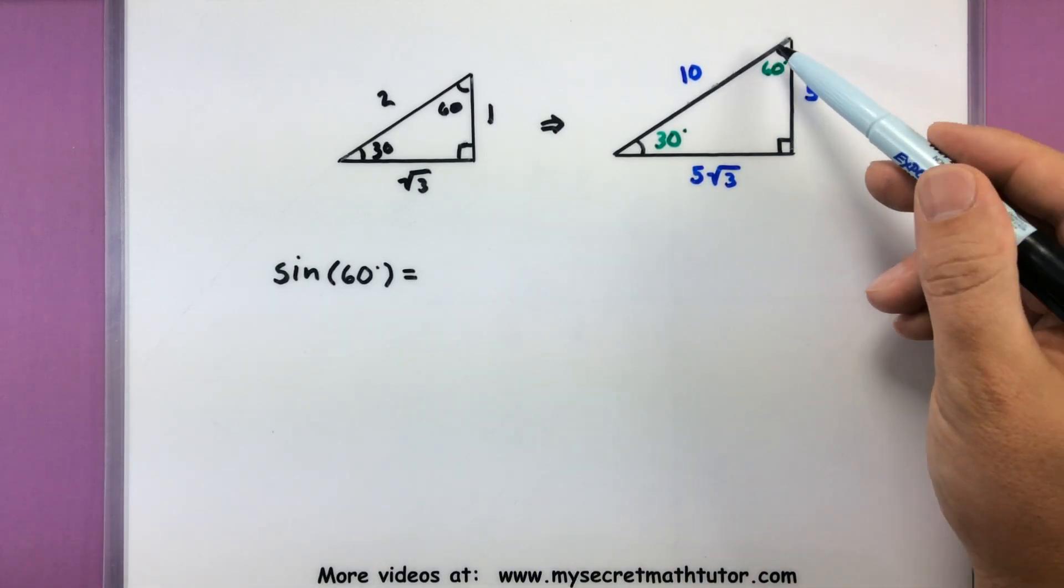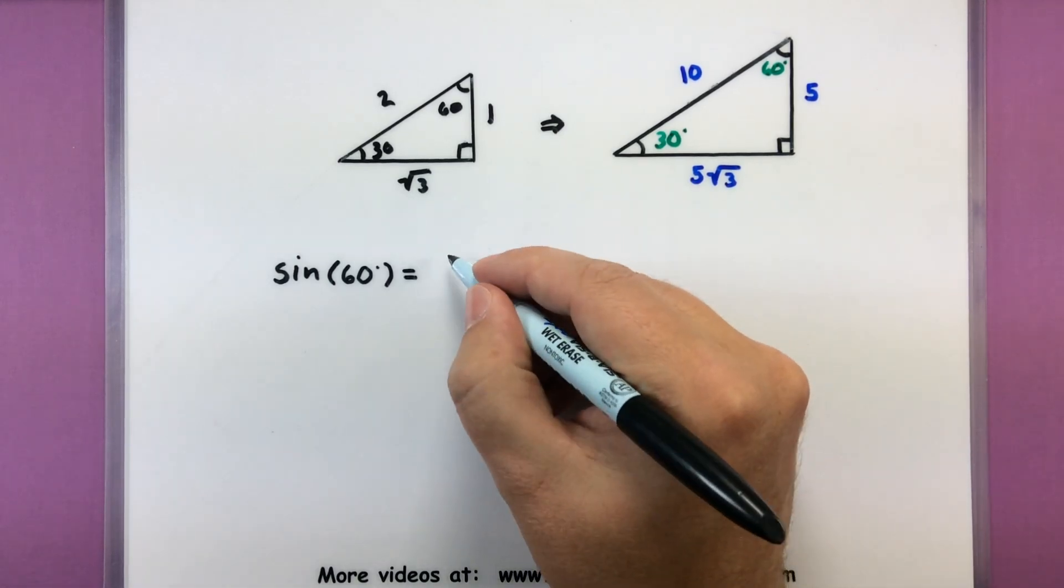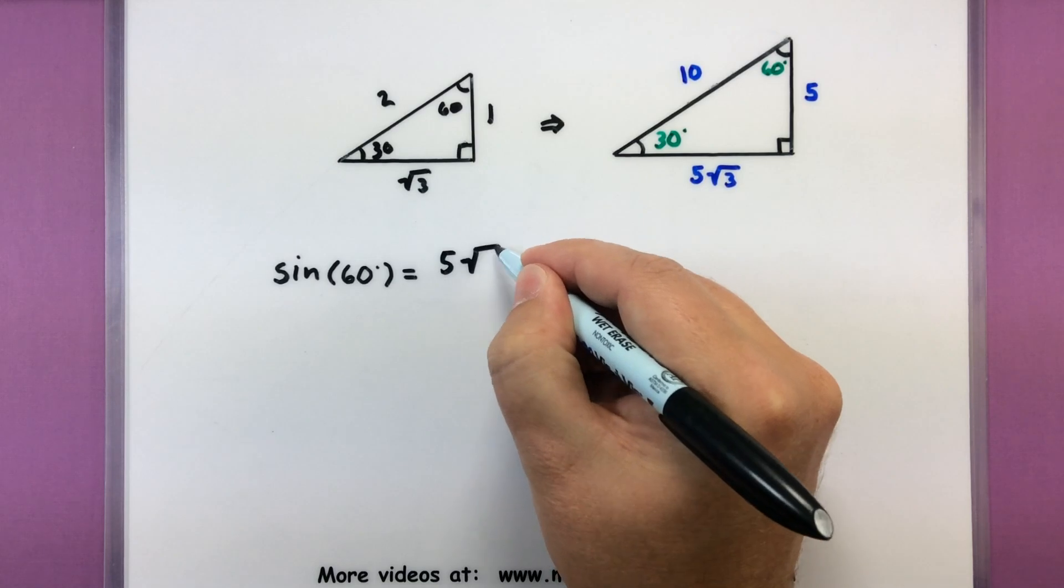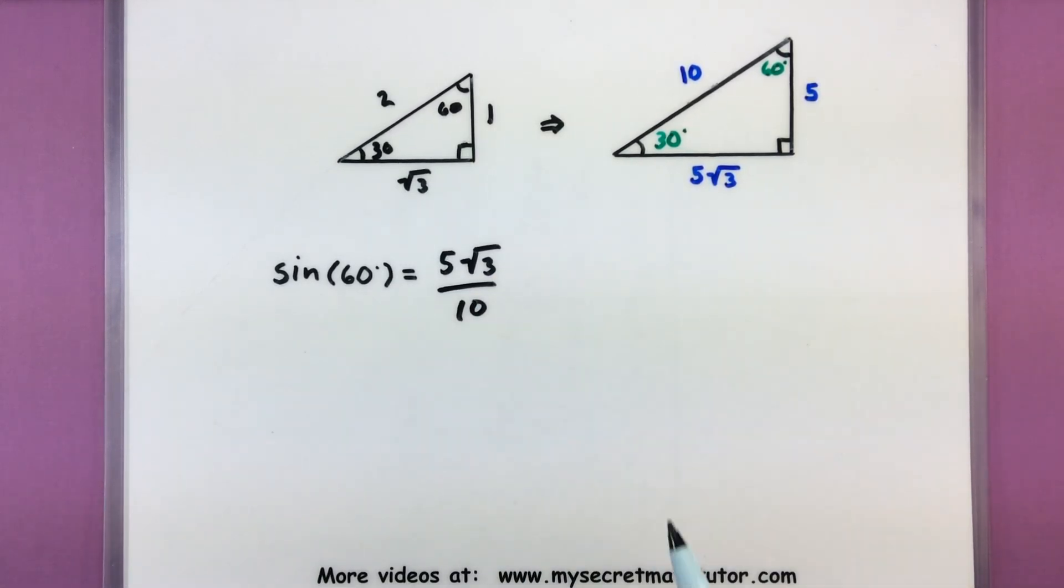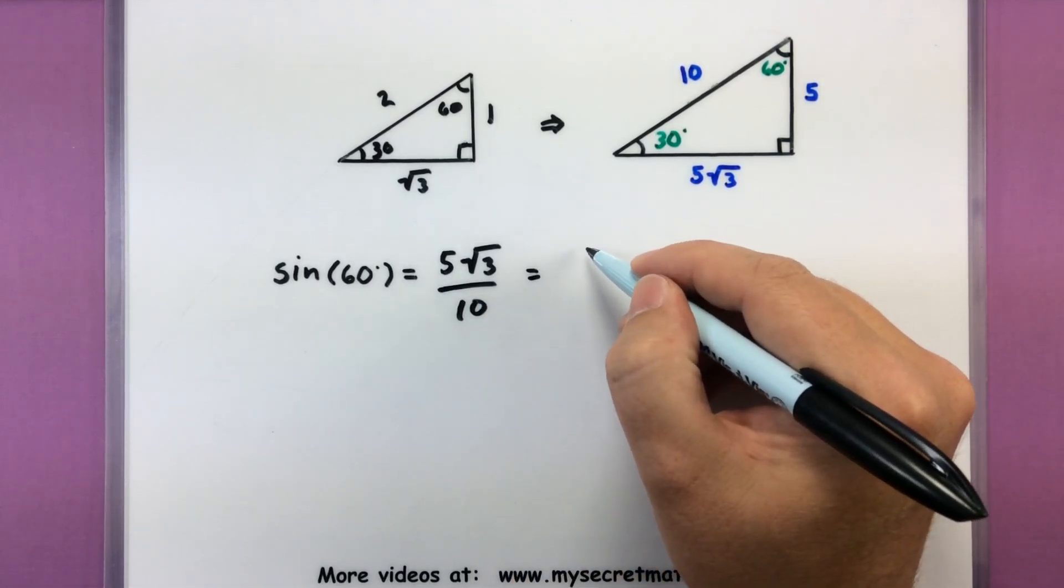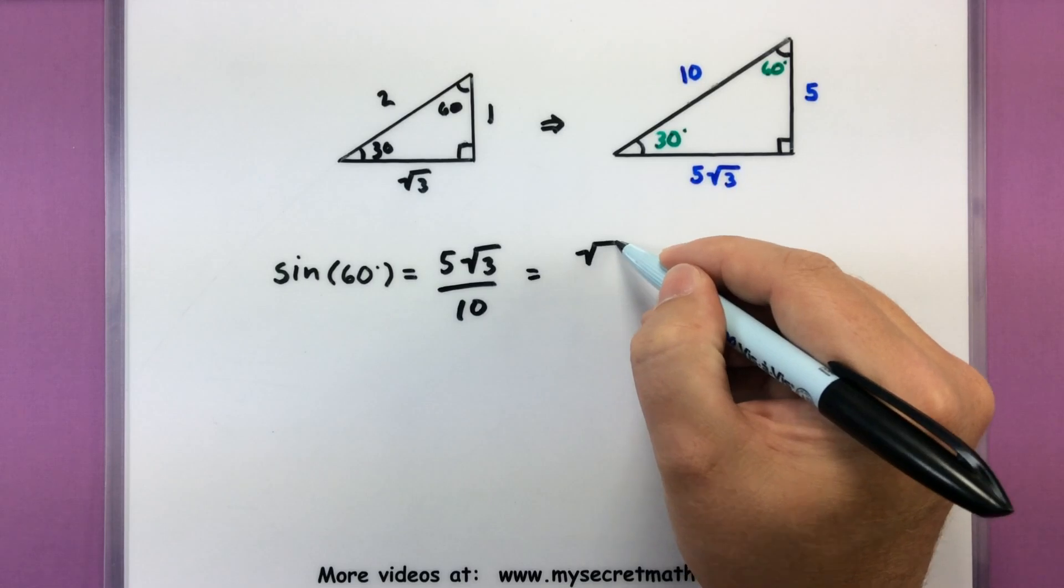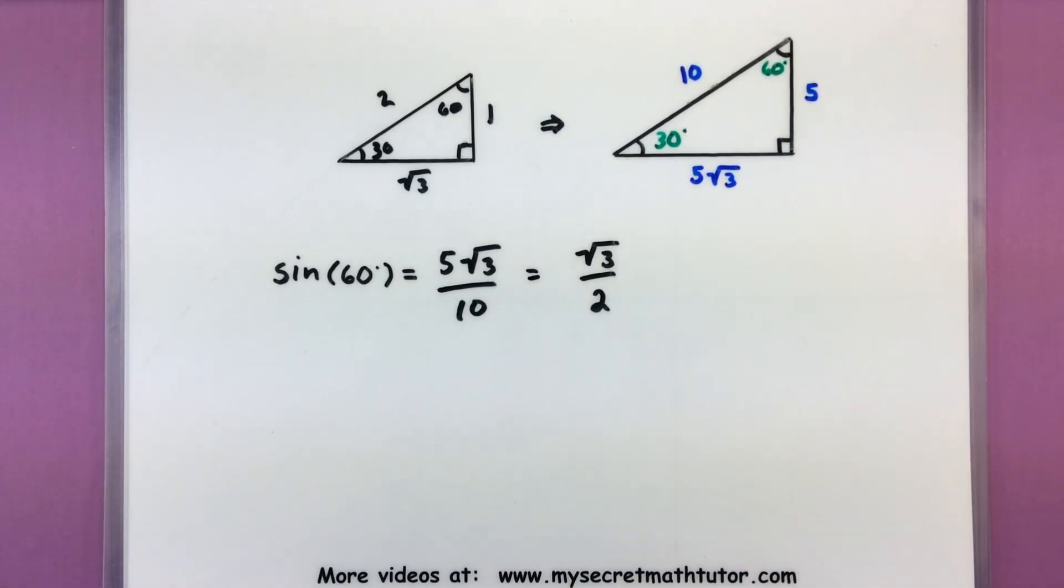So we're going to find sine of 60 degrees. That's the one in the upper right here. So I'm thinking about the opposite side all over the hypotenuse. So you'll see that I have a common 5 in the top and the bottom that I can go ahead and cancel out. 5 goes into 10 twice, and I'd be left with square root of 3 over 2.